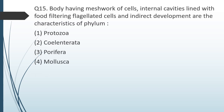Question number fifteen: the body having a meshwork of cells, internal cavities lined with food-filtering flagellated cells, and indirect development are characteristic features of which phylum — protozoa, cnidaria, porifera, or mollusca? The correct answer is option three, porifera.